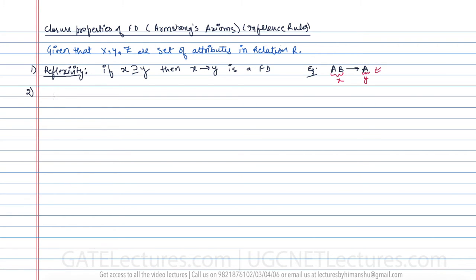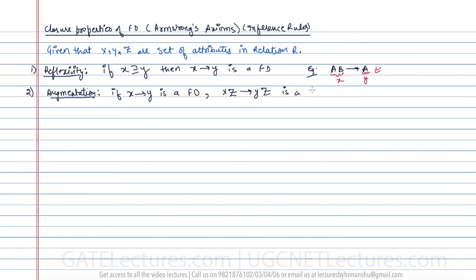The second closure property is called augmentation. If X determines Y is a functional dependency, then XZ determines YZ also holds. You can see we just added the attribute Z in both directions. Note that Z can also be a set of attributes.